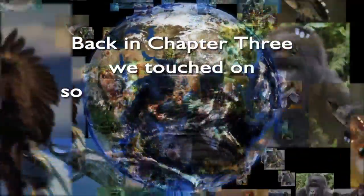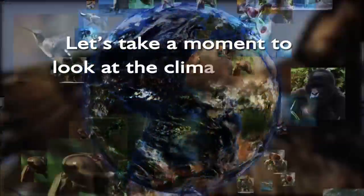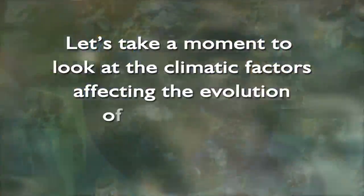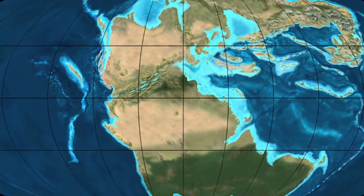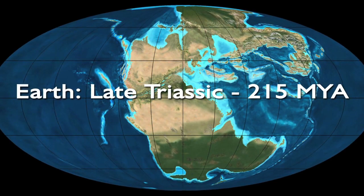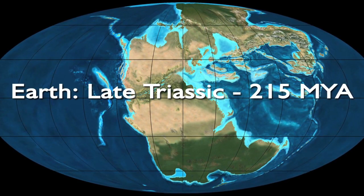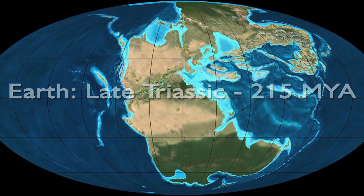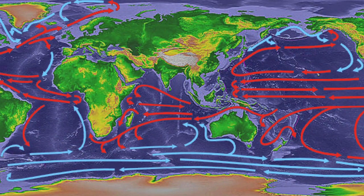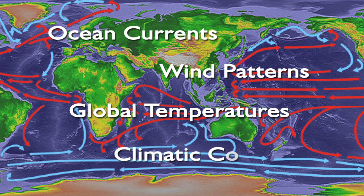But before we begin our look at Australopithecus, let's take a moment to digress. Back in chapter 3 we touched on some of the components driving the evolution of species. Let's take a moment to look at the climatic factors affecting the evolution of our ancestors in eastern Africa. Across the millions of years of Earth's history, one of the most important factors driving evolution has been the ever-changing surface of the Earth. Via plate tectonics and continental drift, the Earth itself is evolving, causing changes in ocean currents, wind patterns, global temperatures, and climatic conditions over thousands and millions of years.